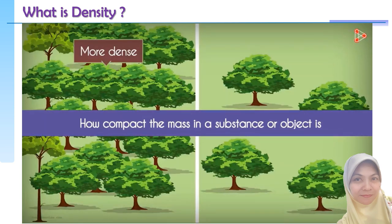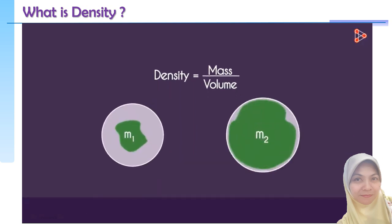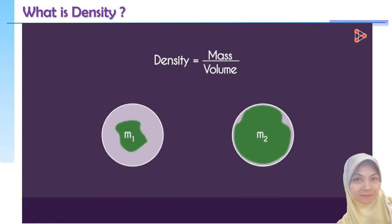If we have to go by its scientific definition, we would say that density is mass per unit volume. In short, it tells us how much mass exists in a given volume. The unit of density is kilogram per meter cubed.